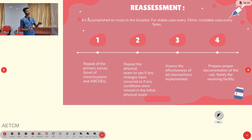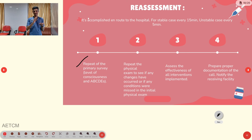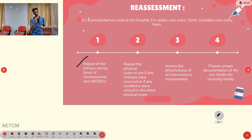The final part is reassessment. For stable cases, reassess every 15 minutes en route to the hospital; for unstable cases, every 5 minutes. Reassessment includes repeating the primary survey (airway, breathing, circulation, disability, exposure), rechecking physical examination for any changes from head to foot, assessing the effectiveness of any interventions performed (such as oropharyngeal or nasopharyngeal airways), and preparing proper documentation and notifying the receiving facility.